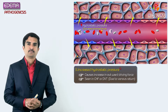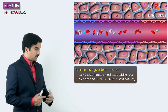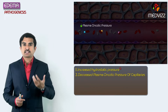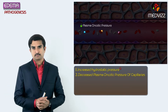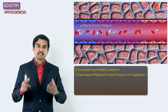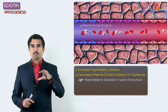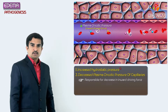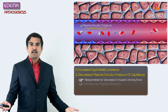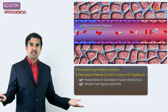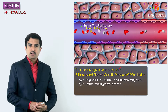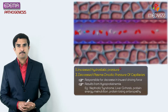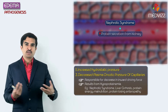Next, what about the condition where you will see decreased plasma oncotic pressure of capillaries? Whenever that happens, it is responsible for a decrease in the inward driving force. The main reason is hypoproteinemia, which causes a decrease in the driving force. Hypoproteinemia is more commonly seen in conditions like nephrotic syndrome, where there is increased protein excretion from the kidneys.